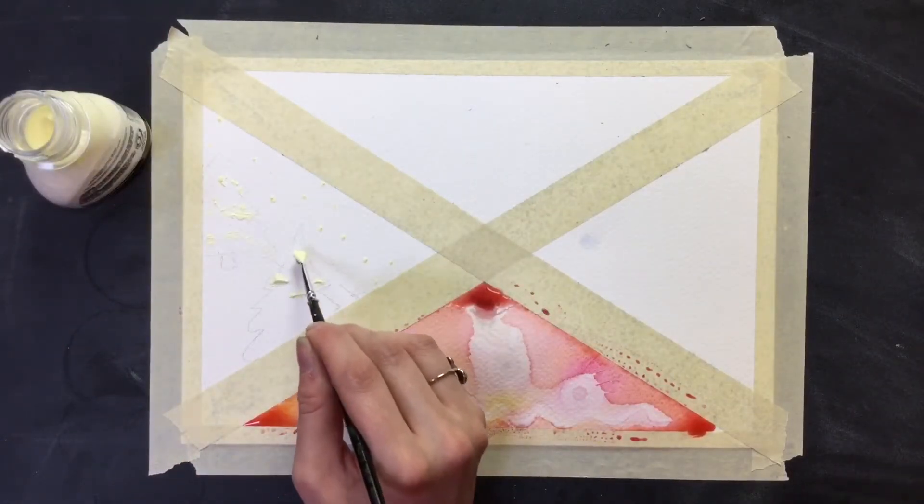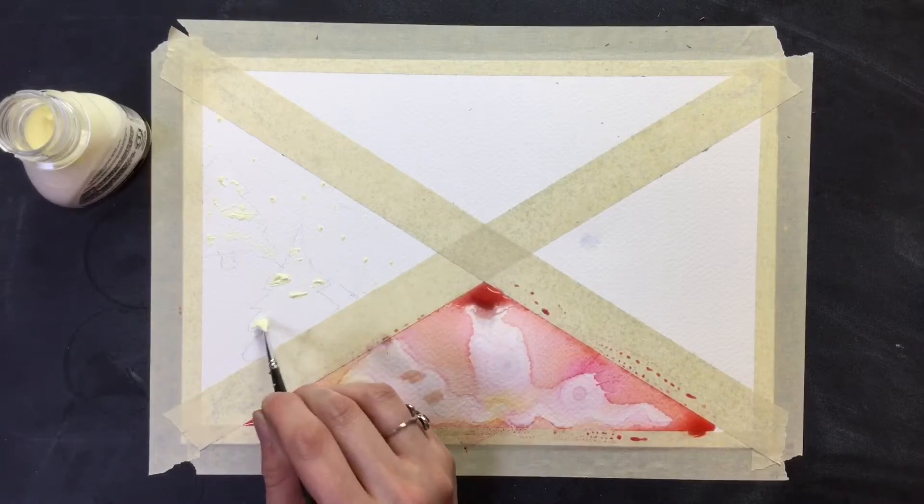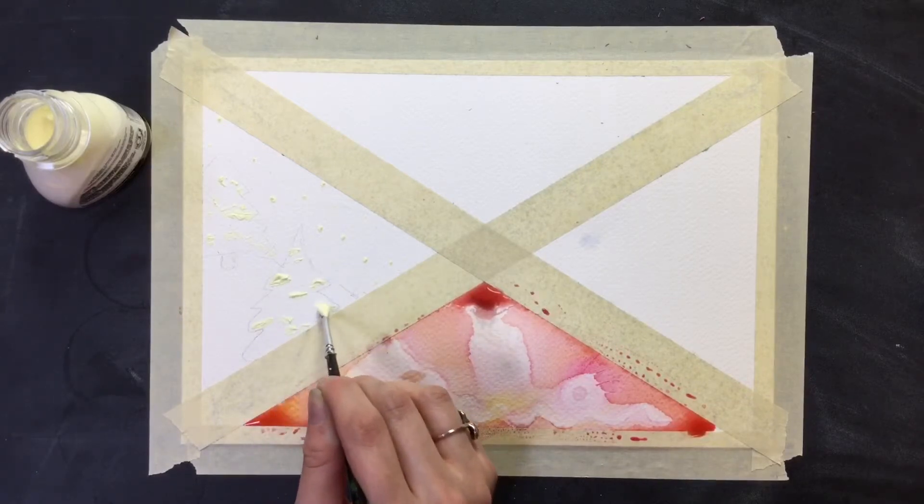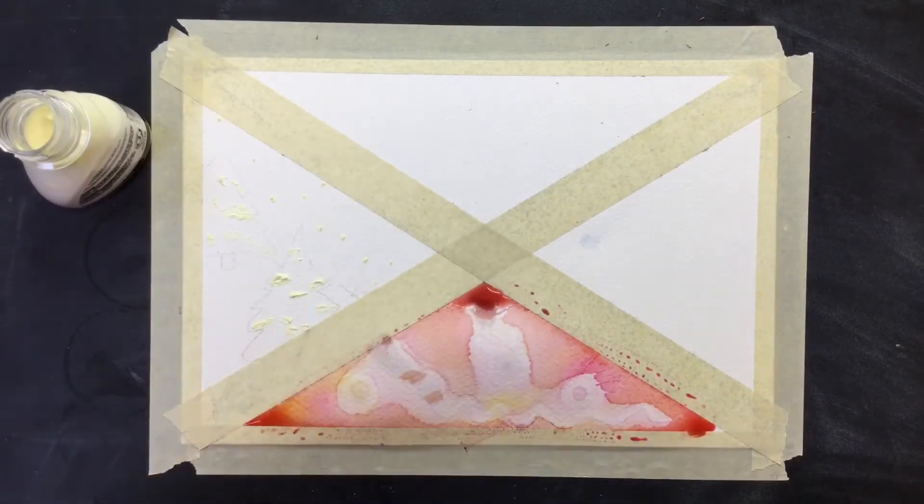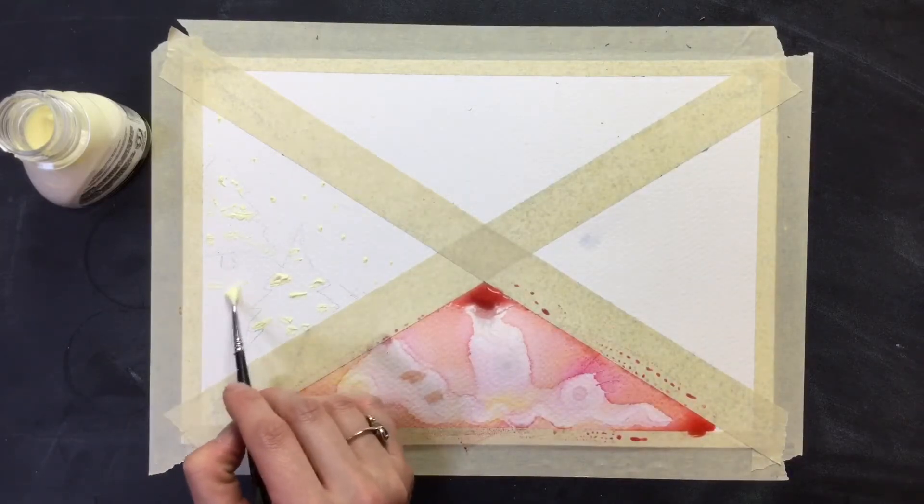I know snow isn't all white, but I could always go back on top of the masking fluid and add hints of blue or whatever color I'm trying to preserve.